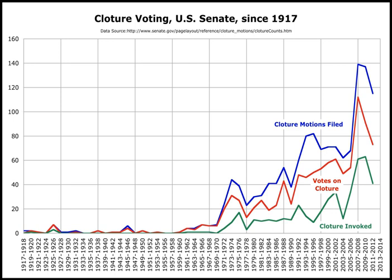The Senate rules permit a Senator, or a series of Senators, to speak for as long as they wish and on any topic they choose, unless three-fifths of the Senators duly chosen and sworn—usually 60 out of 100—bring the debate to a close by invoking cloture under Senate Rule 22.